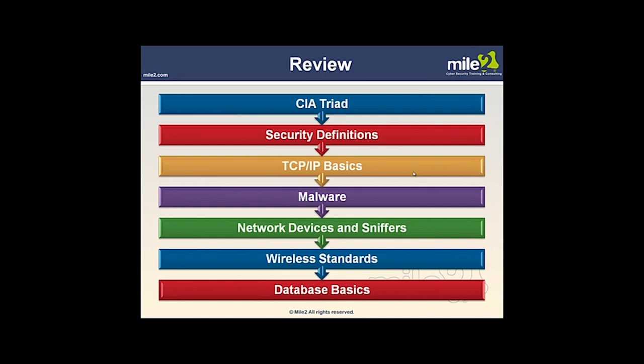In this very long chapter, we've looked at the CIA Triad — Confidentiality, Integrity, Availability — Security Definitions, a little bit about TCP/IP Basics, Malware including viruses, worms, and Trojan horse programs, Network Devices and Sniffers covering hubs and switches, Wireless Standards including B, G, N, and A, and Database Basics.